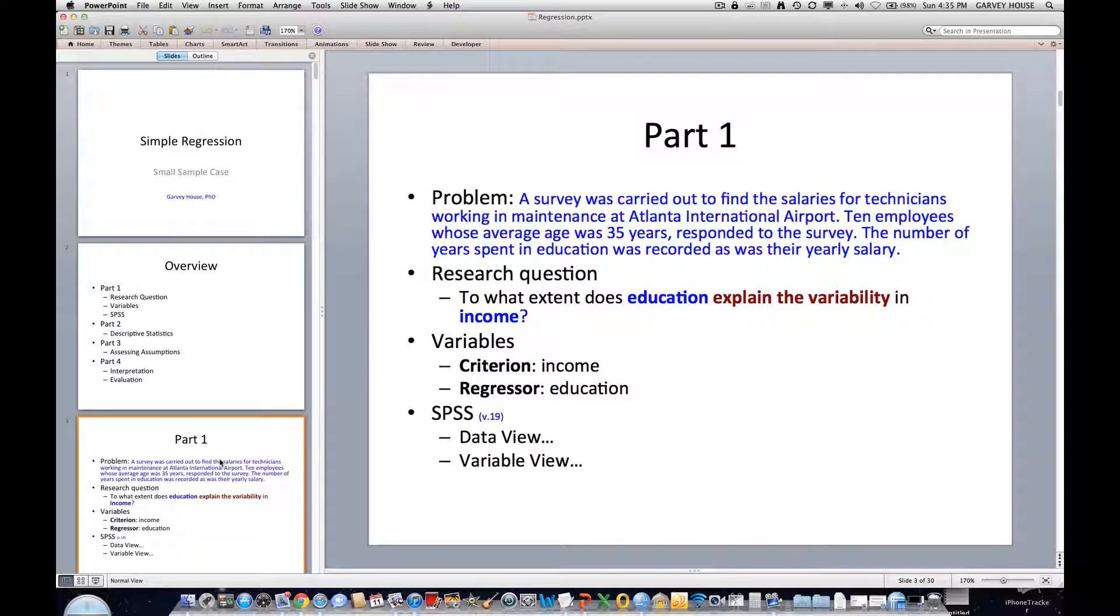The dependent variable in this case, or the criterion variable, as it is referred to more accurately in regression analyses, is income. And we want to know, what explains the variability in income? That is, why do some people make more money than other people? And why do other people make less money than the average?